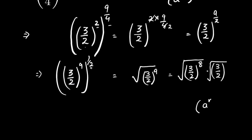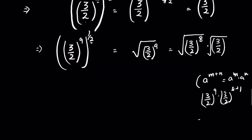How? Because a to the power m plus n is equal to a to the power m, multiplied by a to the power n. So (3 upon 2) to the power 9 can be written as (3 upon 2) to the power 8 plus 1, which is (3 upon 2) to the power 8 multiplied by (3 upon 2) to the power 1. This is how we separated it.